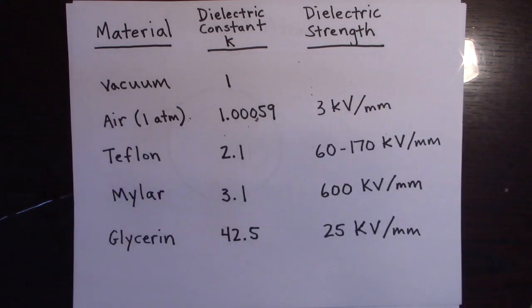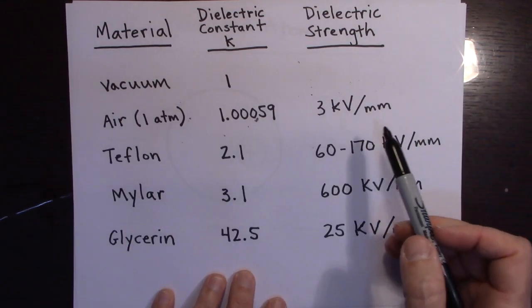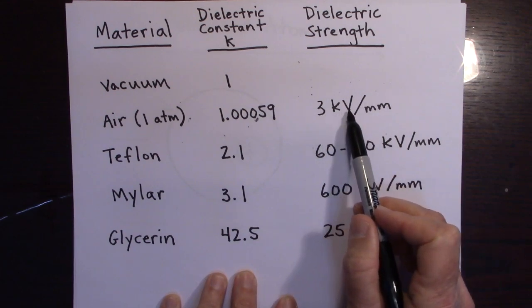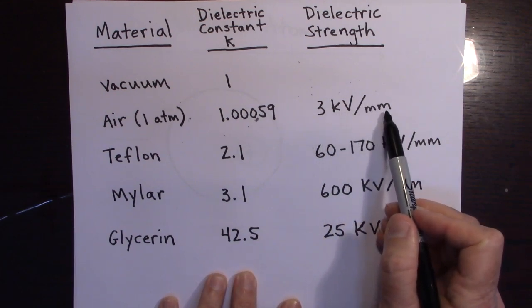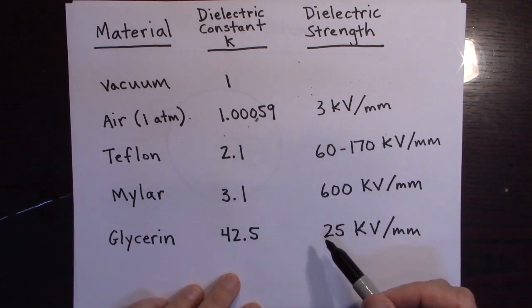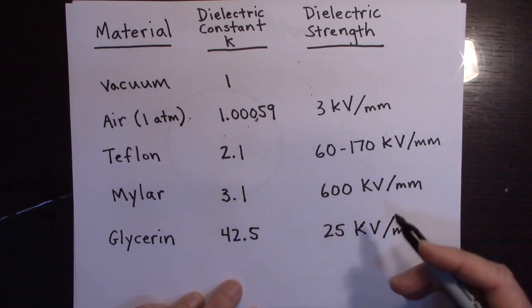So, what this is then saying is that if you put an electric field of 3,000 volts per millimeter between the plates of a capacitor, it's going to break down, and it's not going to be a capacitor anymore. It's going to actually allow the flow of electricity.